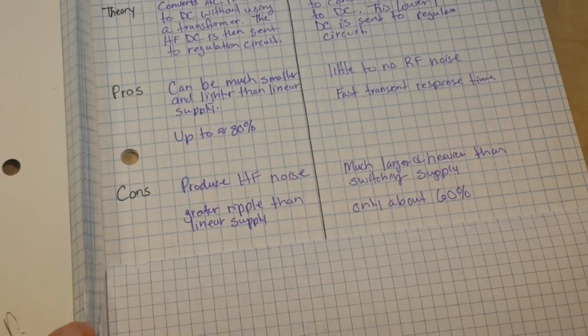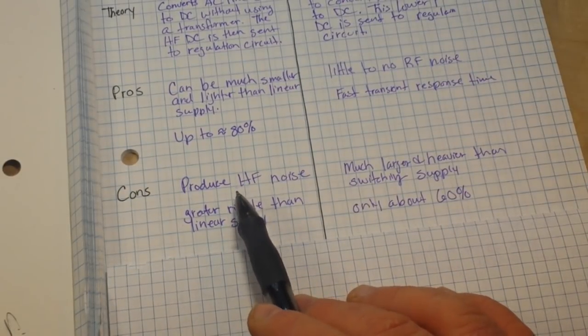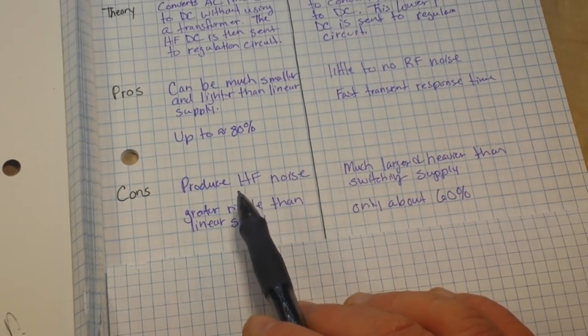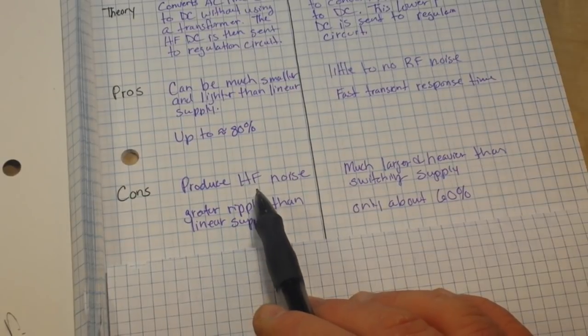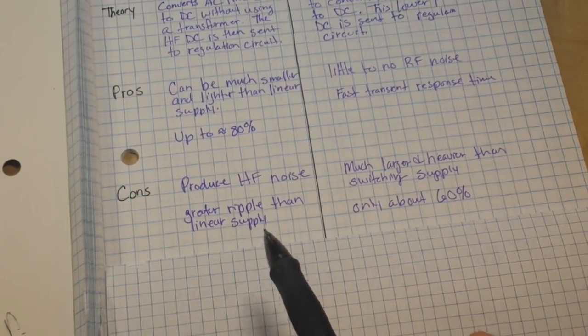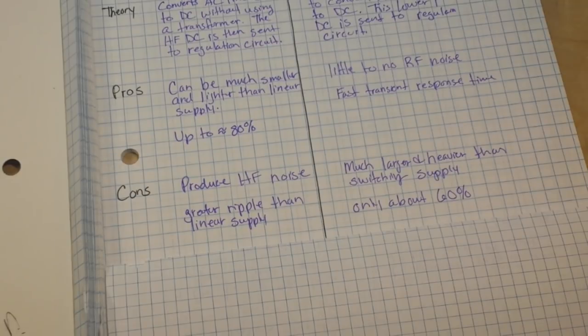Now the cons. Your switching power supply is going to produce high-frequency noise. That's bad for sensitive circuits. And the ripple is also going to be considerably greater than a linear supply. Again, bad for sensitive circuits.